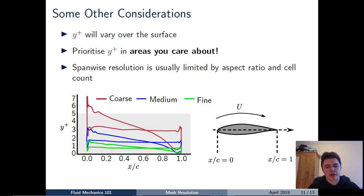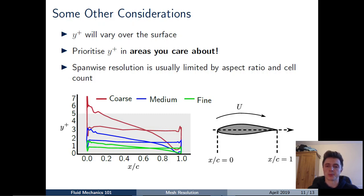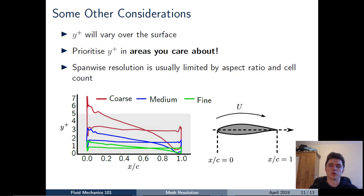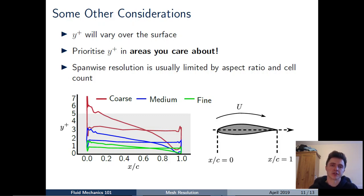Continually refine the mesh and monitor lift and drag until you achieve a sufficiently converged solution that also runs in a realistic time. As YP and Y-plus decrease, cell aspect ratio increases and total cell count grows, slowing the simulation. The goal is an efficient solution that is sufficiently accurate in terms of Y-plus but also runs in a reasonable time — this is where engineering judgment is essential.